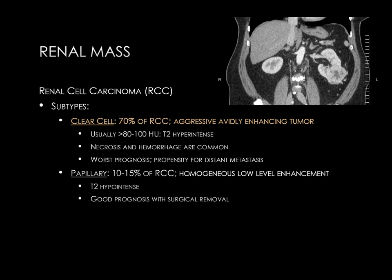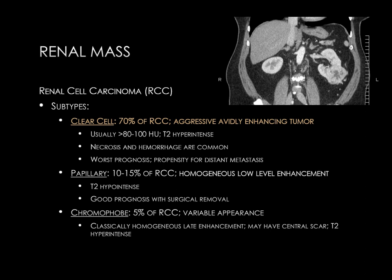The next most common subtype is papillary carcinoma, comprising 10 to 15 percent of RCC. These are hypo-enhancing masses with a relatively good prognosis after surgical removal. On MRI they may appear T2 hypointense. Chromophobe carcinomas are less common, have a variable imaging appearance, and cannot typically be separated from clear cell carcinoma on imaging.